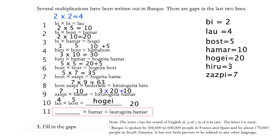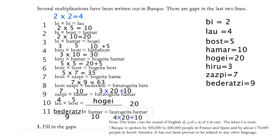Equation 11: something times 10 equals 'lau hogei ta hamar'. Using the method we previously identified, there are three different numbers — 4, 20, and 10 — and similar to above, 4 times 20 plus 10 is 90. So the unknown must be 9, which from equation 8 we know is 'bederatzi'. Now we've finished all of question 1.